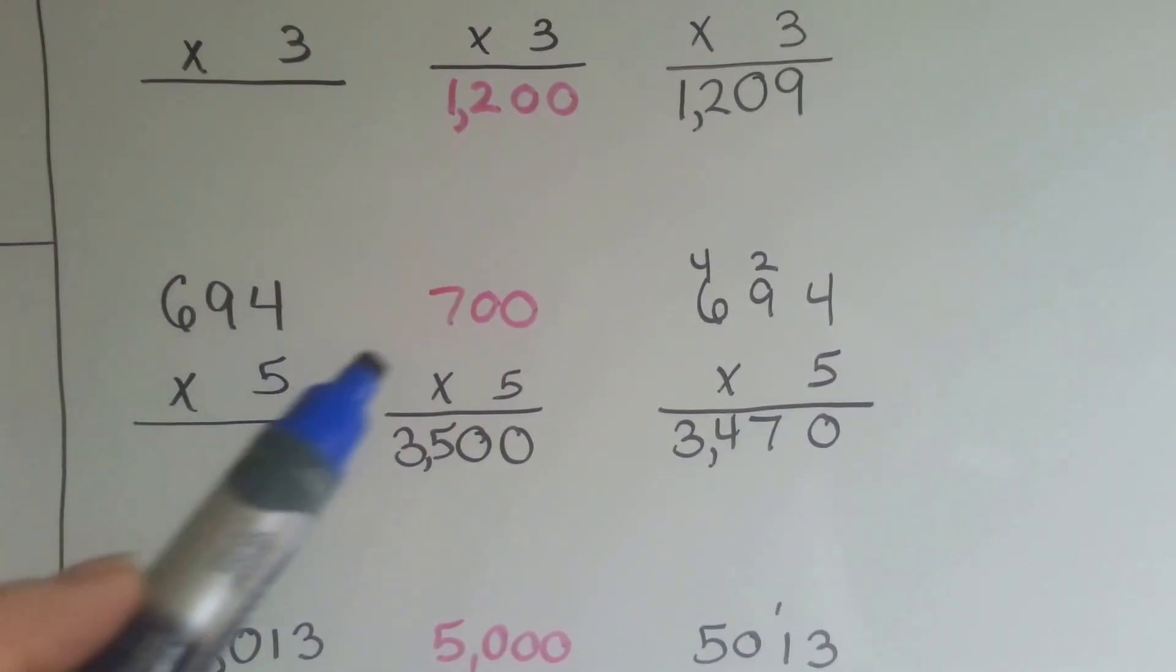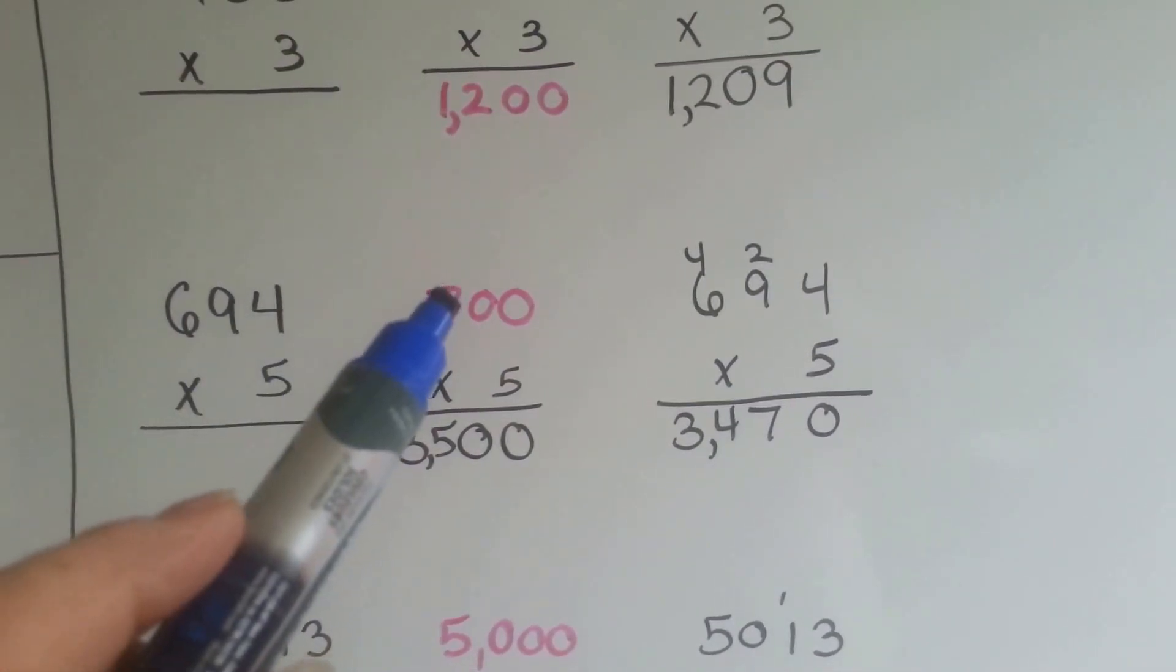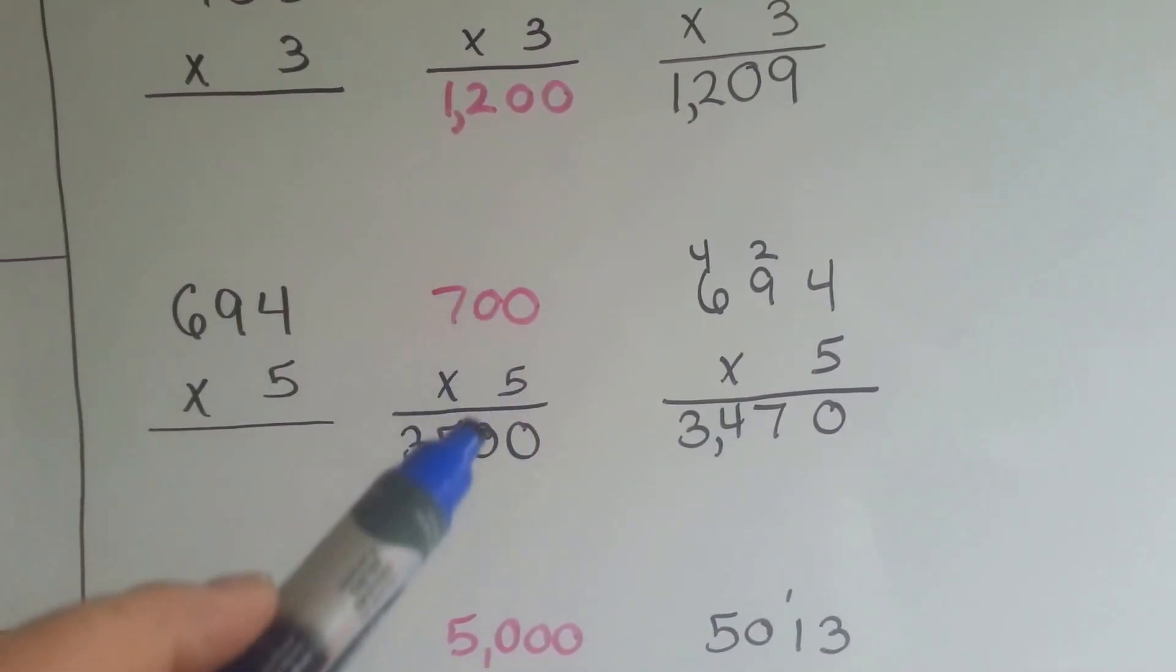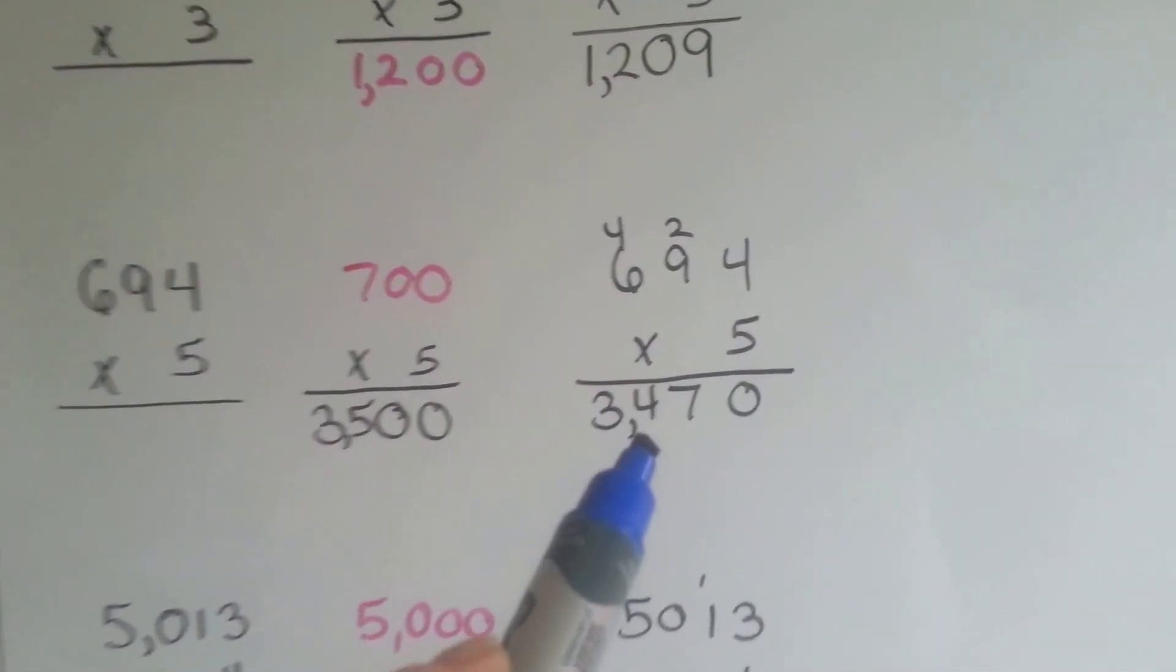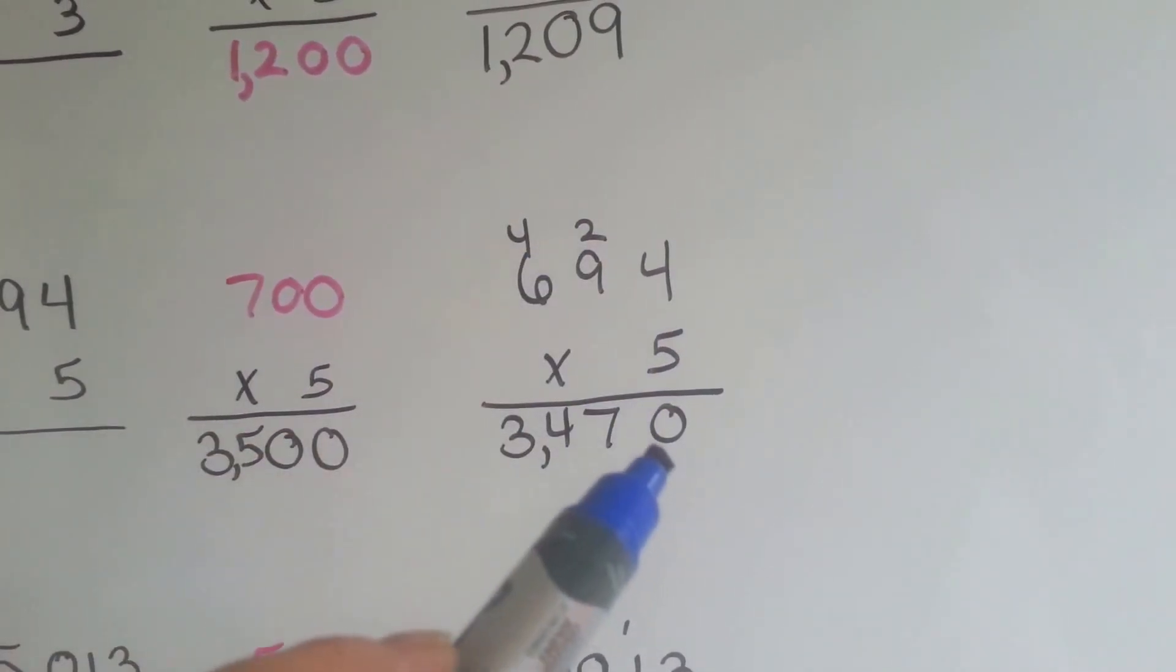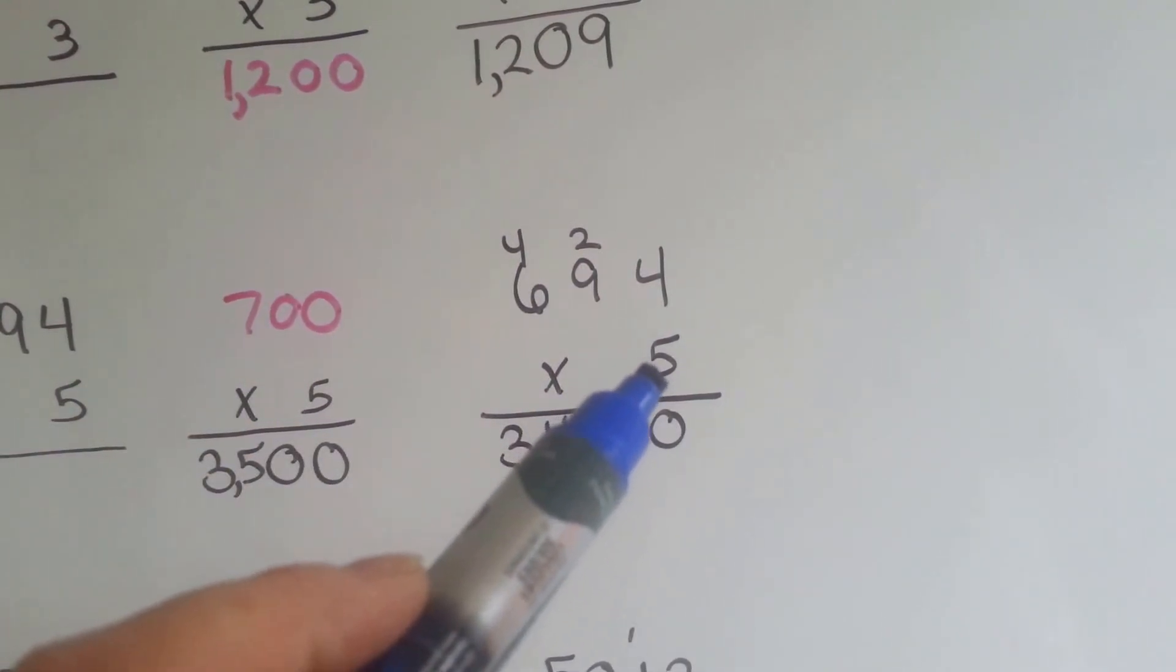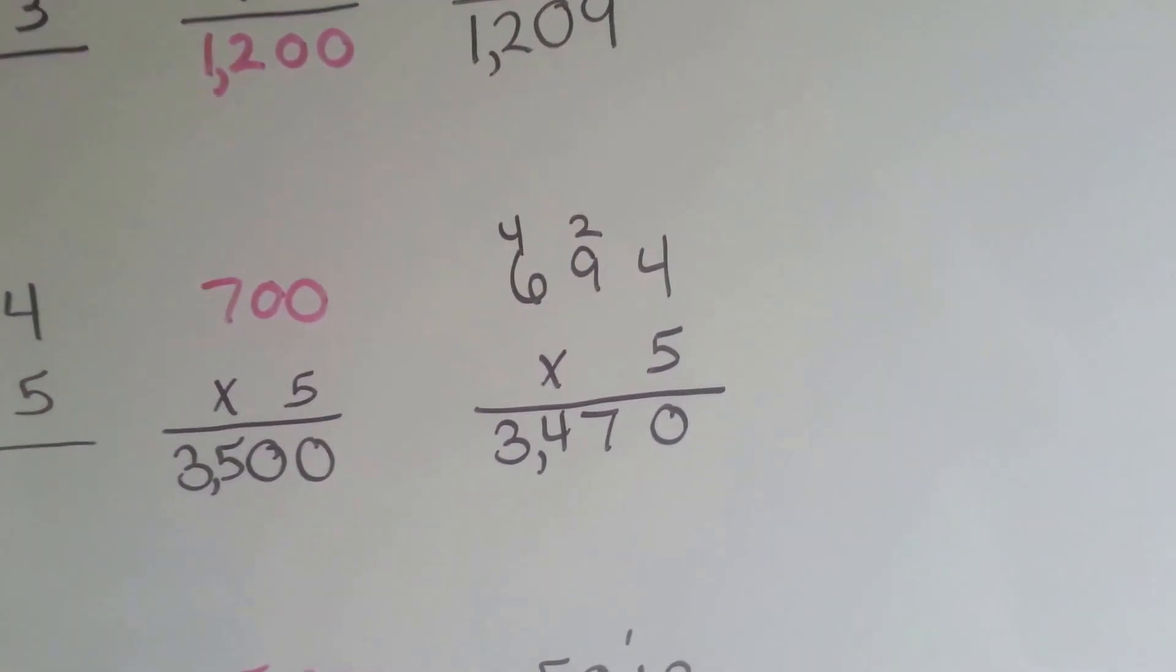We can do it again. 694 times 5 would estimate and round off to 700. That's the closest 100, because the 9 tells the 6 to go up. And then when it's finished, it turns into a 0 and so does everyone else. 5 times 0 is 0, 5 times 0 is 0, and 5 times 7 is 35. We put our comma in. If we do it for an exact answer, we do 5 times 4 to the 1's, which is 20. Carry the 2, put the 0 down. 5 times 9 is 45, plus the 2 is 47. We carry over the 4, put the 7 down. Now it's the 100's turn. 5 times 6 is 30, plus 4 is 34, and we remember our comma.